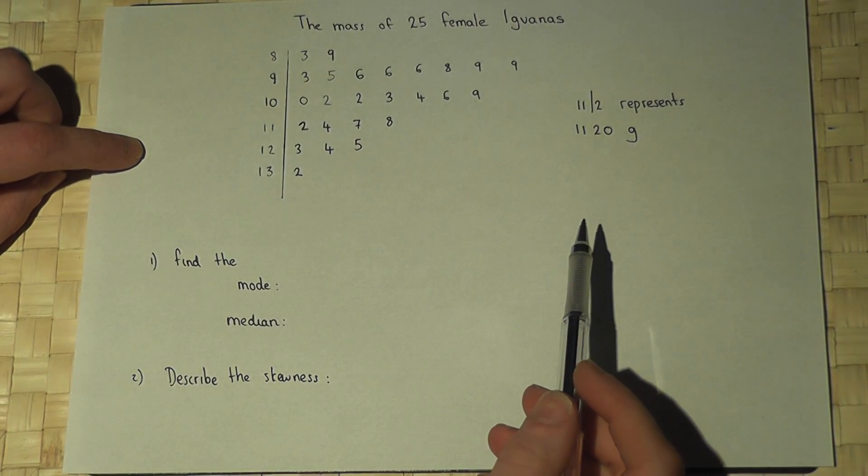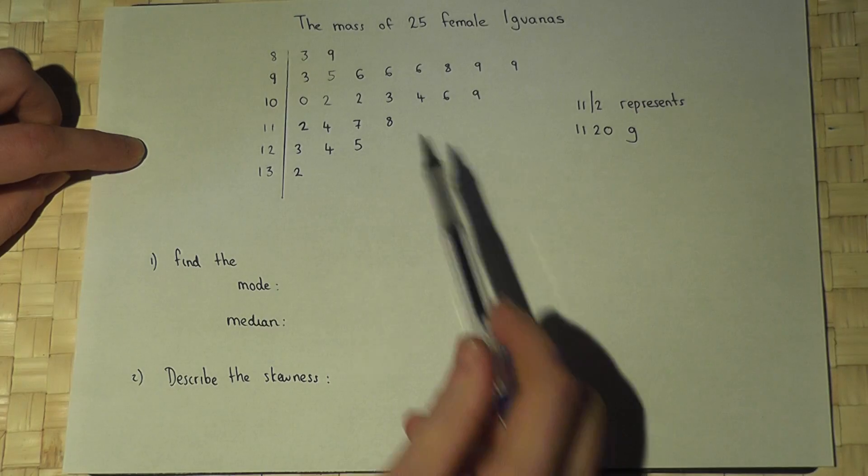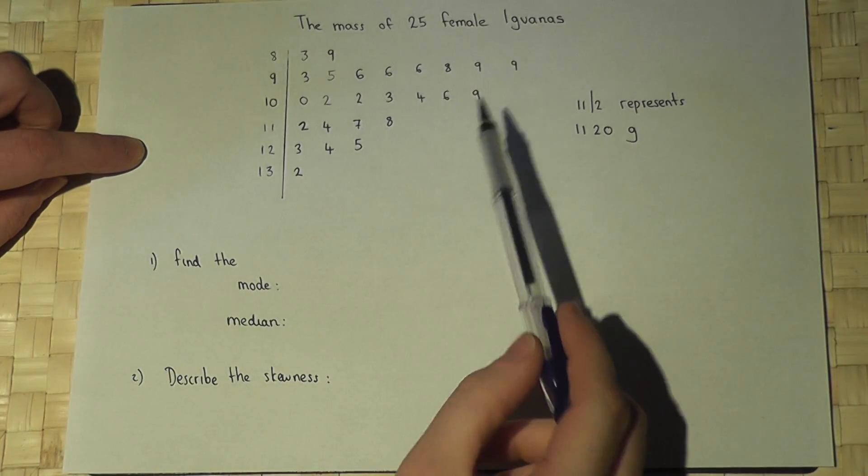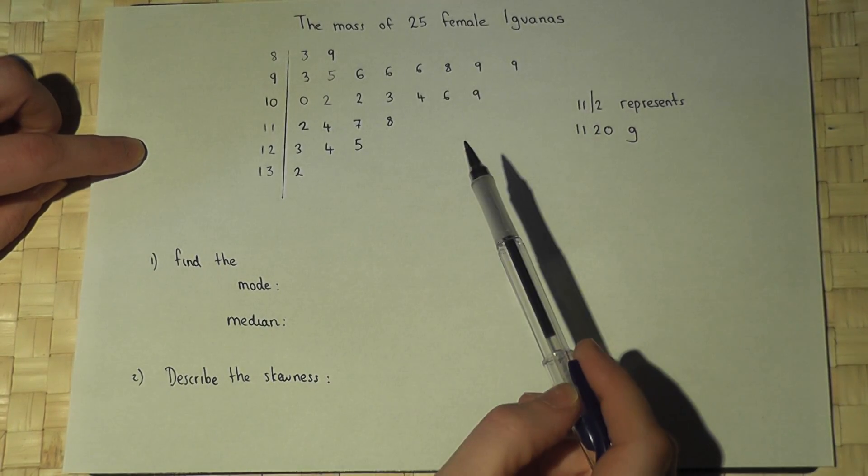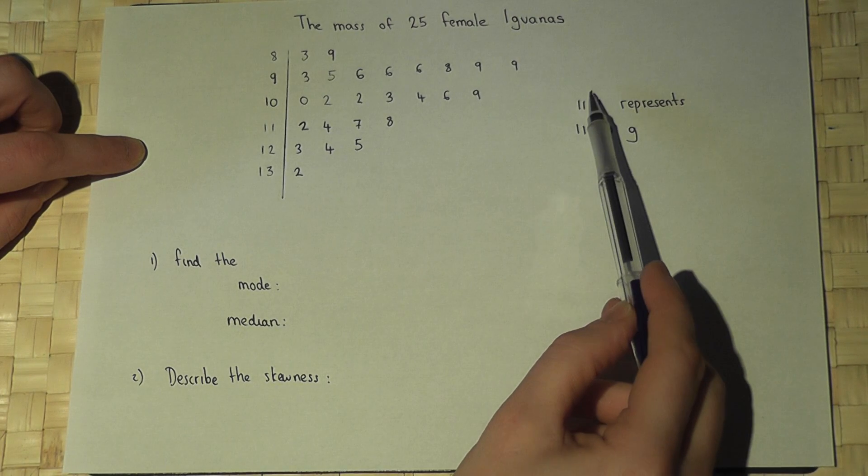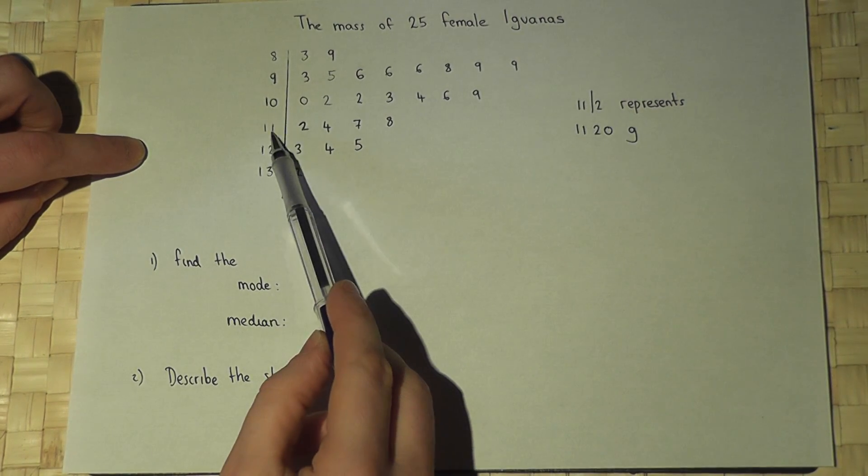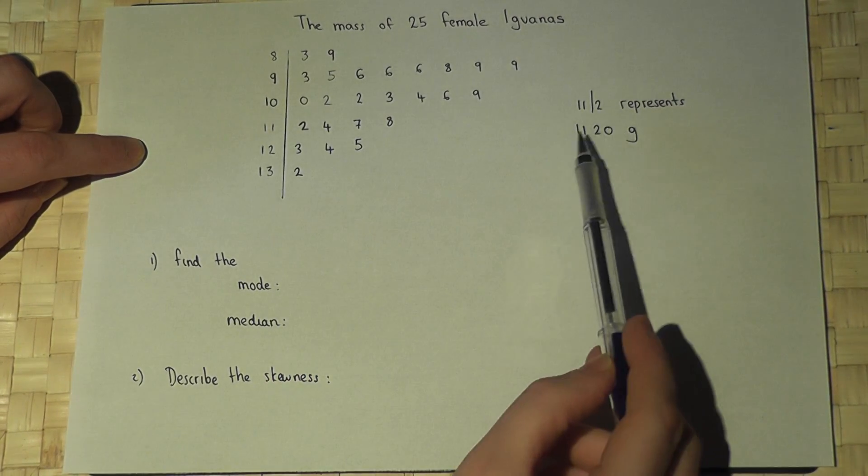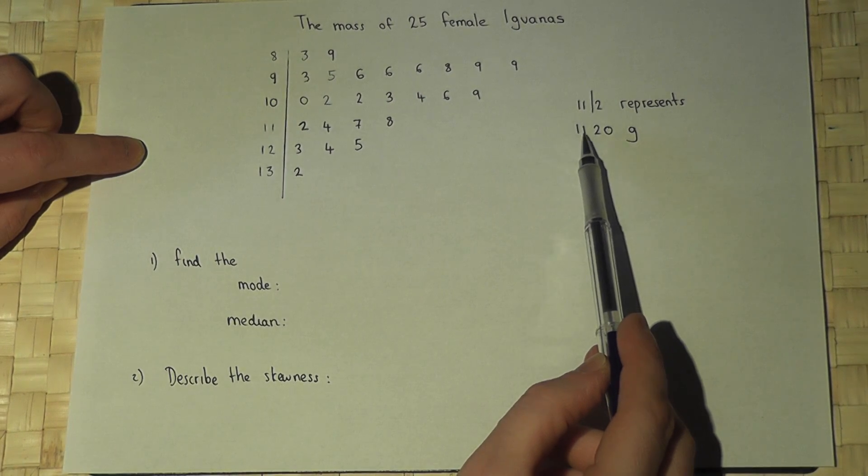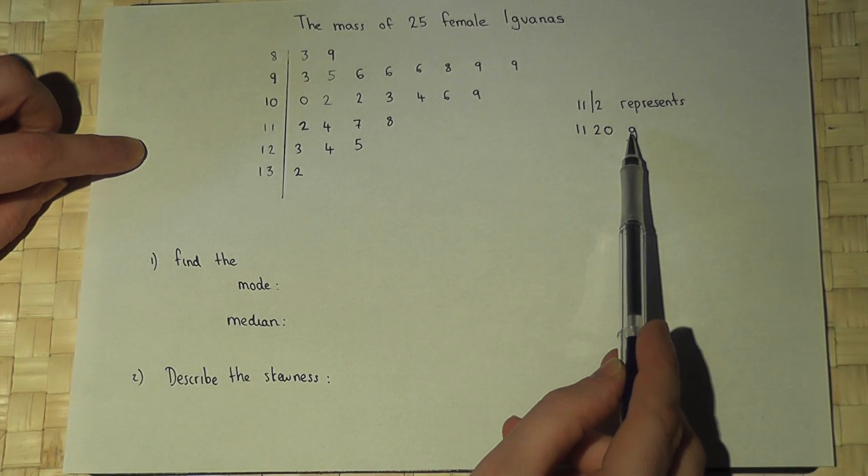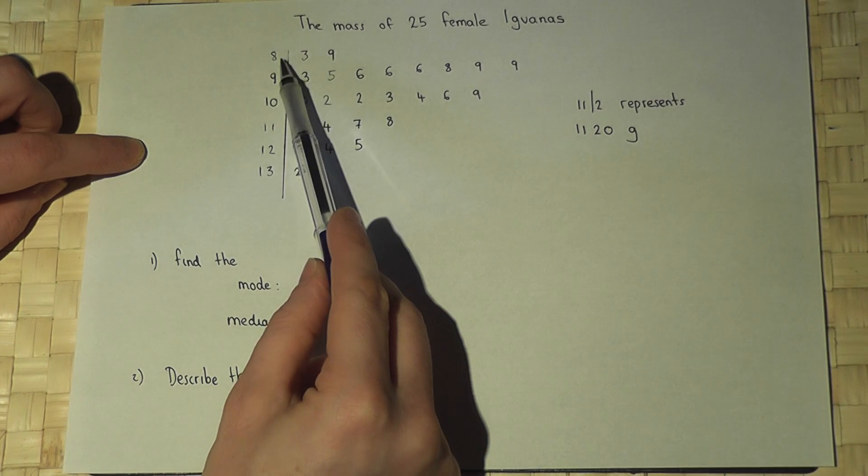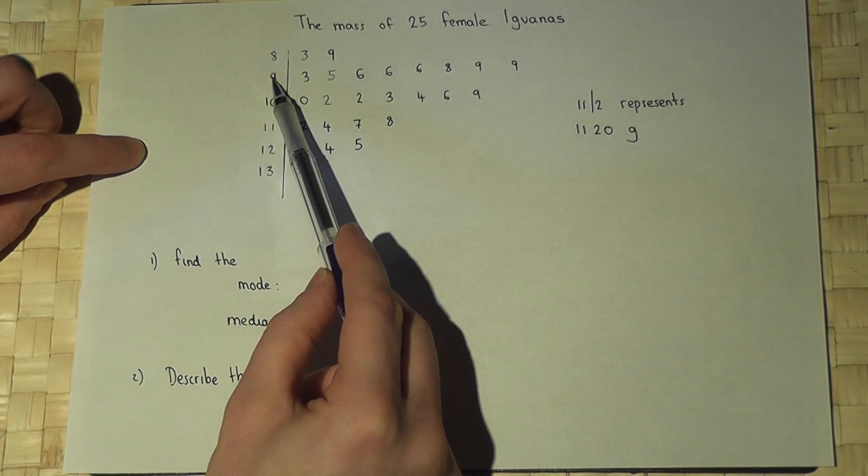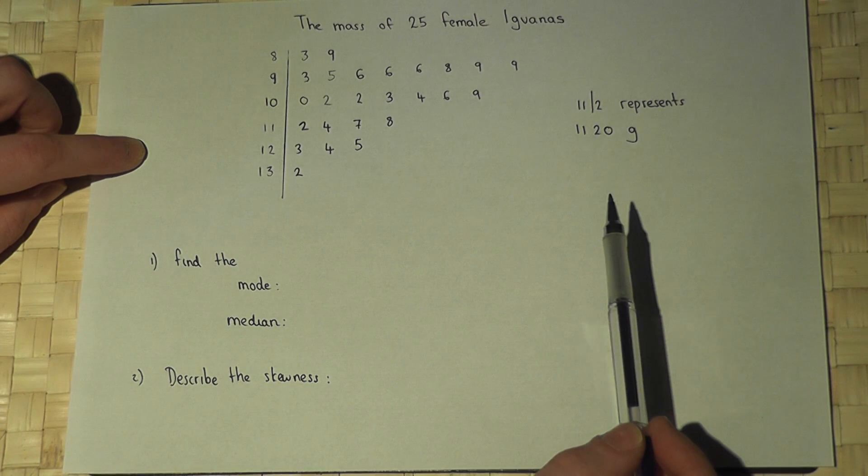This stem and leaf diagram represents the mass of 25 female iguanas. We're told that 1-1 dash 2 represents 1,120 grams, so 8-3 will be 830 grams, and 9-5 will be 950 grams.